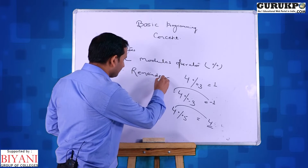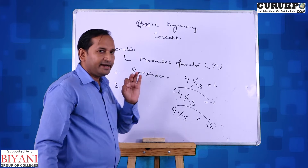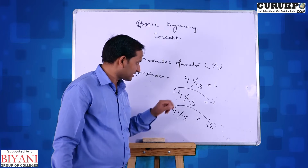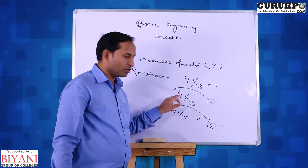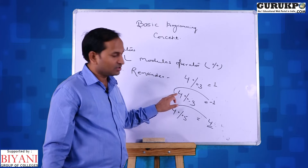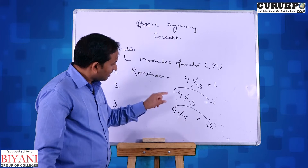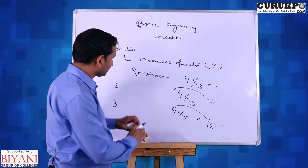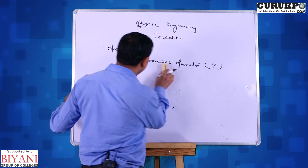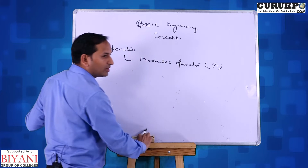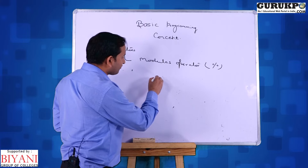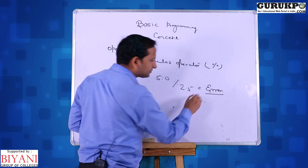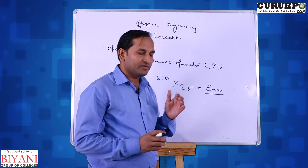To revise: first property — modulus gives remainder (4 mod 3 gives 1). Second property — output sign depends on numerator sign (minus 4 mod minus 3 gives minus 1). Third — if numerator is less than denominator, output is the numerator. And the last property: modulus always works with integer data types only. For example, 5.0 modulus 2.5 gives an error because in C and C++, modulus does not work with float values.